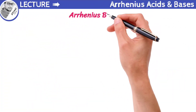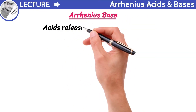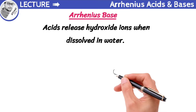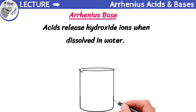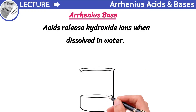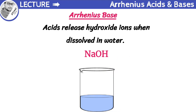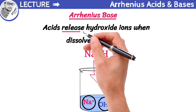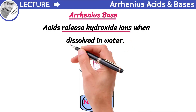According to Arrhenius' concept, bases are substances that release hydroxide ions when dissolved in water. Let's apply this to sodium hydroxide, which is a compound made up of sodium, oxygen, and hydrogen atoms. When we dissolve sodium hydroxide in water, it breaks down into its components — sodium ions and hydroxide ions. This means that sodium hydroxide is a base because it has the ability to release hydroxide ions when dissolved in water.